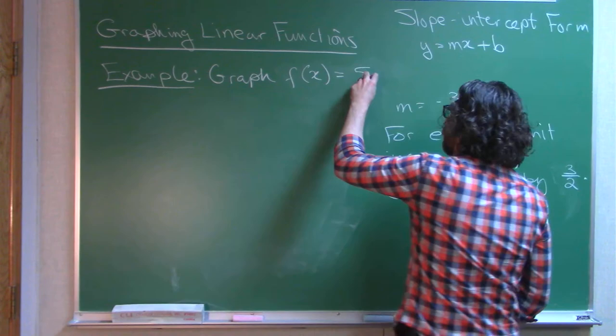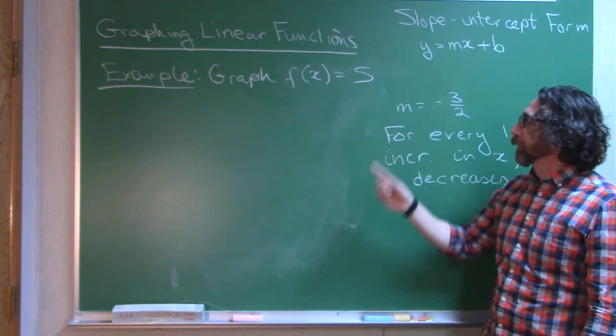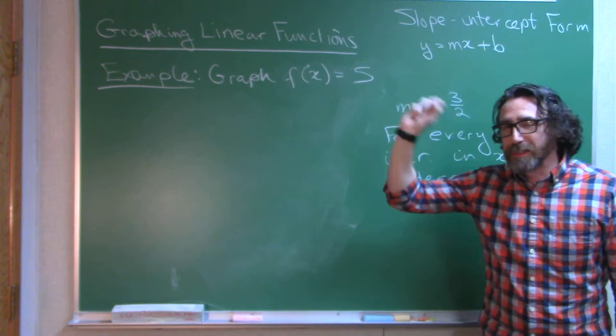Let's do something like this. f(x) = 5. Thinking of this kind of structure, well, the coefficient of x, well, there is no x. There are 0 x's. The coefficient of x is 0. The slope is 0.